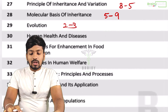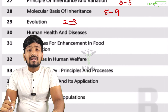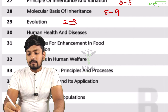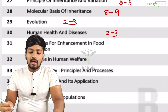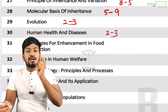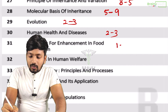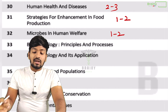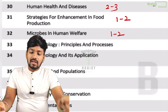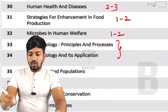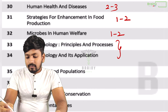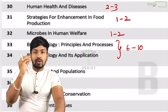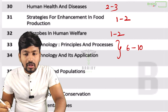Human health and diseases: the content is not too large but there are two to three questions. Strategies for enhancement of food production: one to two questions. Microbes and human health: one to two questions. The last two chapters — biotechnology unit — expect six to ten questions.